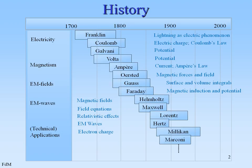Milliken determined the electric charge of the electron, and then Marconi with the invention of radio waves. After Marconi came a lot of people in development, but this is the framework — it was ready around 1900. Thank you very much.